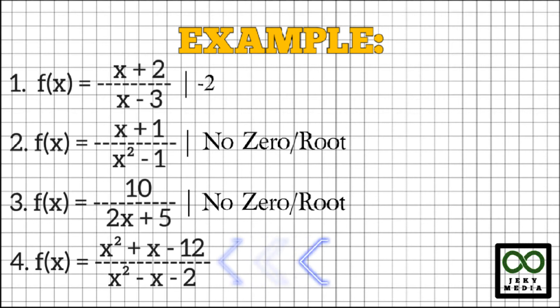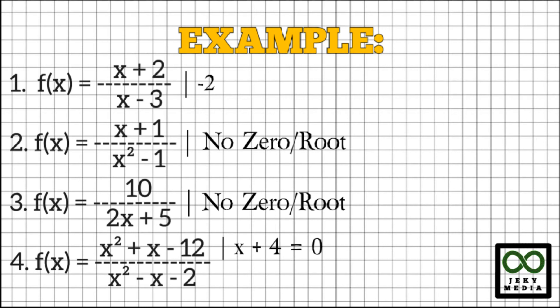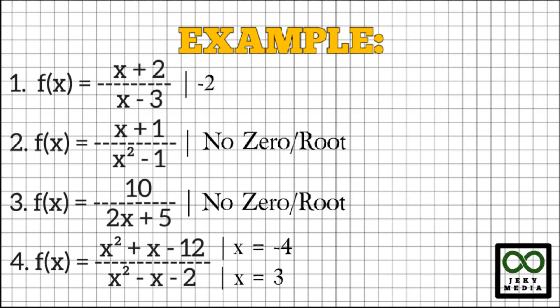Number 4: f(x) equals (x² + x − 12) over (x² − x − 2). This rational function is factorable. The factors for the numerator are (x + 4) and (x − 3). The factors for the denominator are (x − 2) and (x + 1). Since there are no common factors between the numerator and denominator, let's equate the numerator factors to zero. First, x + 4 = 0: transpose 4 to the right and change its sign, giving x equals negative 4. Next, x − 3 = 0: transpose −3 to the right and change its sign, giving x equals positive 3. Therefore, the zeros for this rational function are negative 4 and positive 3.